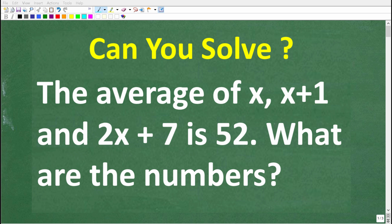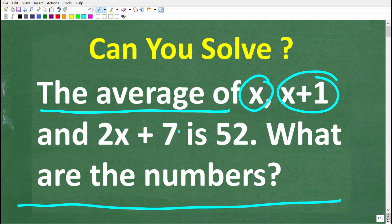Okay, so let's see if you know enough math to solve this word problem. So here is the question. The average of x, x plus 1, and 2x plus 7 is 52. What are the numbers, i.e., what are the actual numbers that are represented with these three expressions right here?